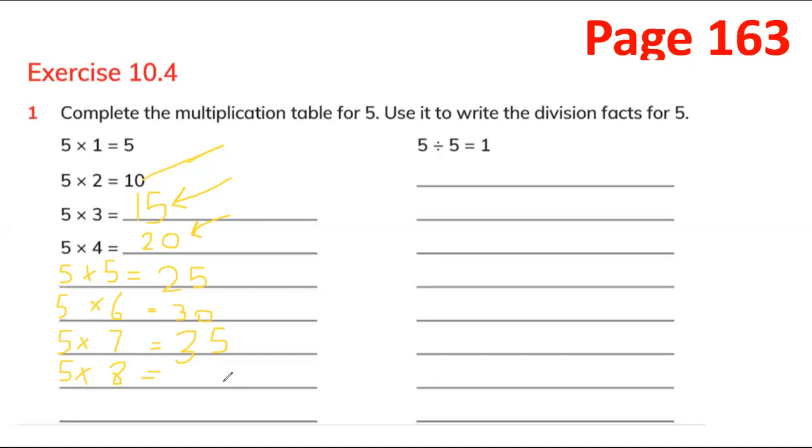5 multiply 9 equals 45. Keep the big number in your head, small number 5 on your fingers, so 40 plus 5 equals 45. 5 multiply 10 equals 50. Now this is the divide.